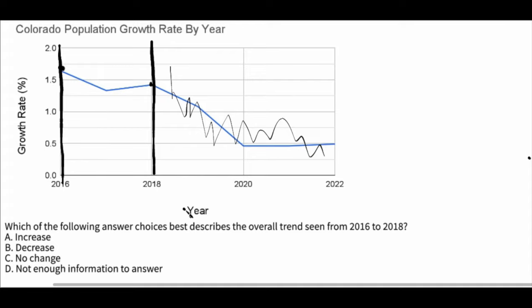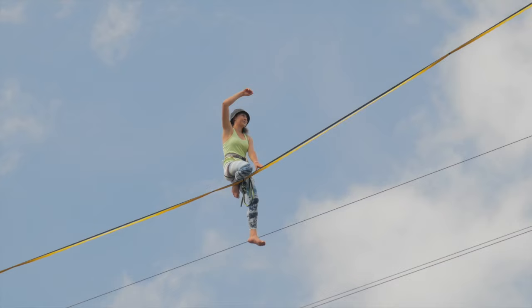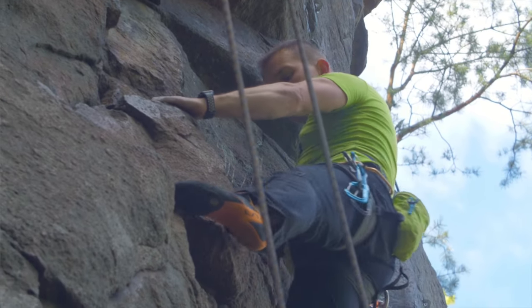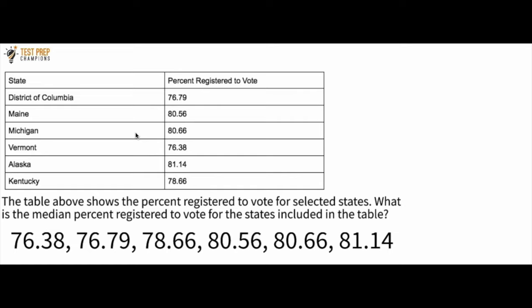The champion's challenge question — in my opinion the hardest question in the video — is about a table showing the percent registered to vote for selected states. What is the median percent registered to vote for the states included in the table? The median is the middle number when numbers are ordered from smallest to largest. The crucial first step is to take these values and order them from smallest to largest.